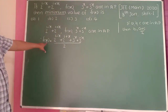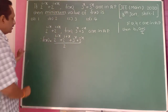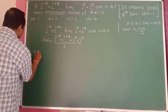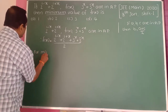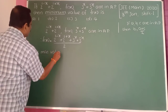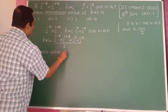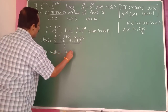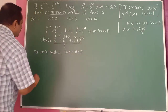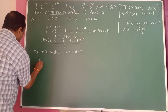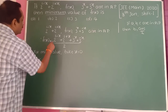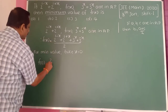We want the minimum value of f of x. Therefore, take x equal to 0 for minimum value. So f of 0 is equal to 2 raised to 1, which becomes 2, plus 2 raised to 1, which is also 2.